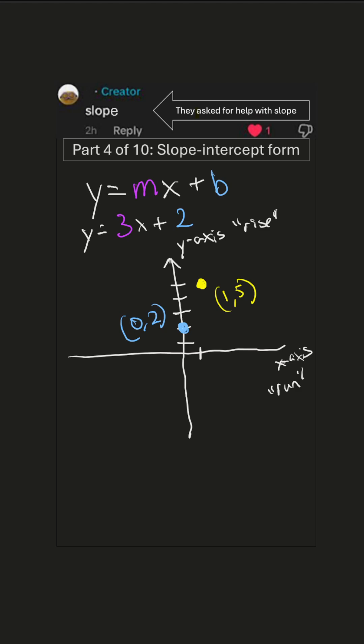So that's how we use the slope-intercept form to plot a line. Pretty cool. And we can even check. Right 1, up 3. Follow for more.